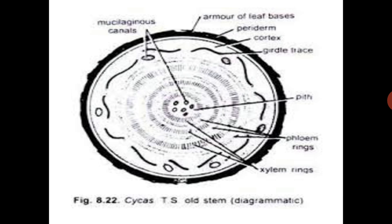There is a large pith in the center made up of parenchymatous cells. This is the structure of an old stem of Cycas. It shows miscellaneous canals, leaf bases, and periderm — it is a secondary old stem.